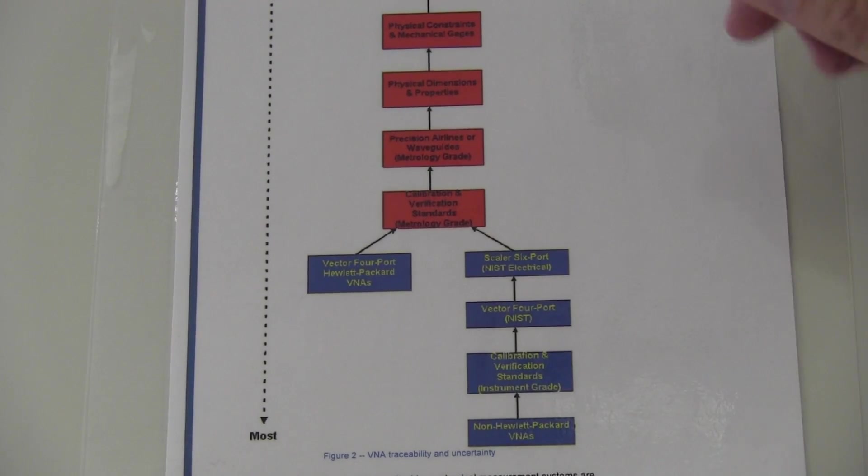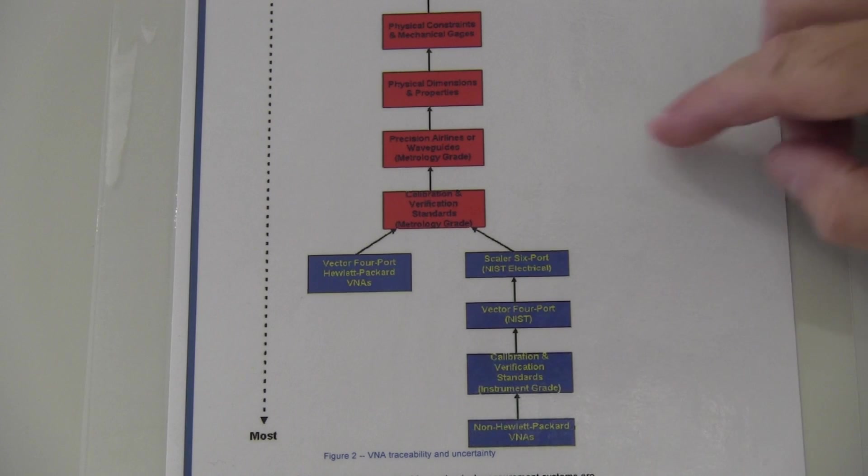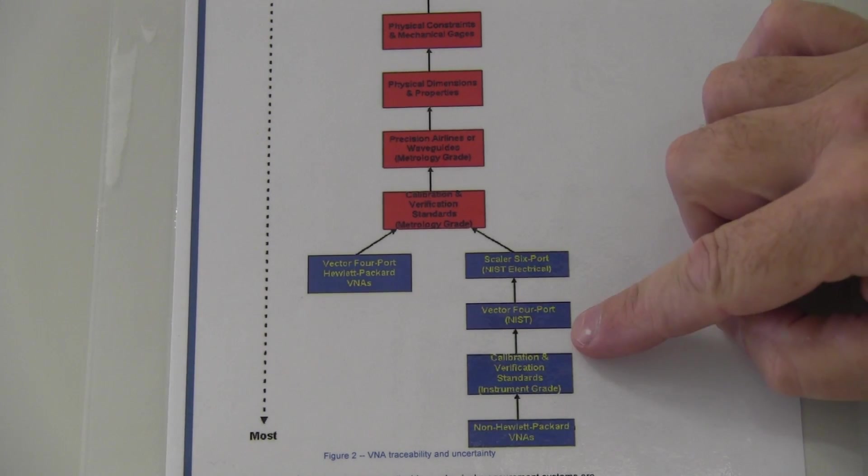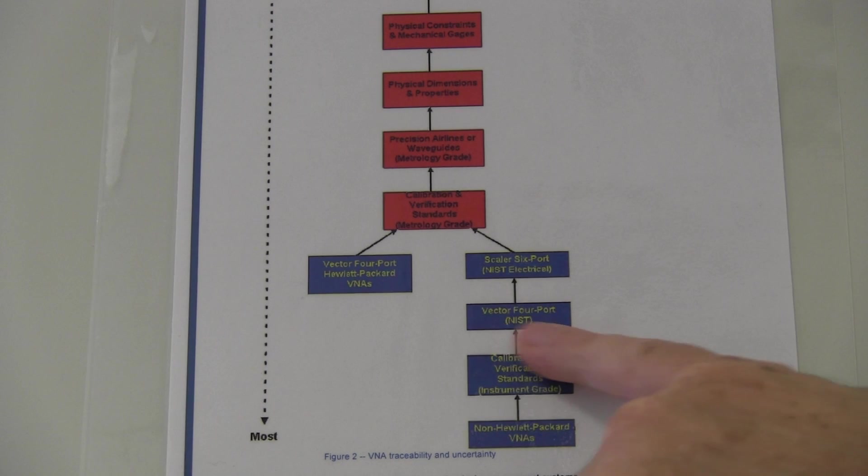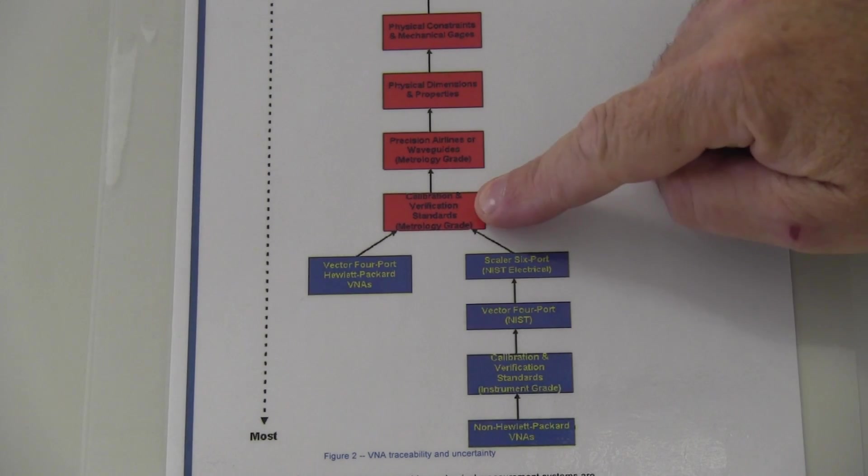So if you think NIST are good folks, there's NIST there. For vector and four-port, we're talking vector network analyzer. So there's NIST there on the traceability chart. This is our standards lab here.